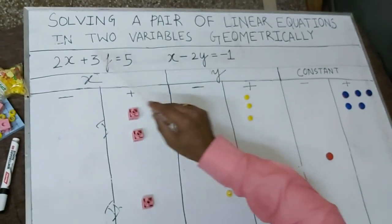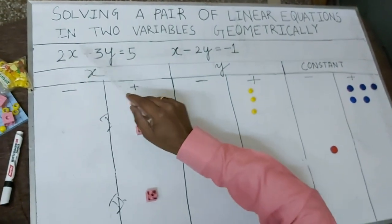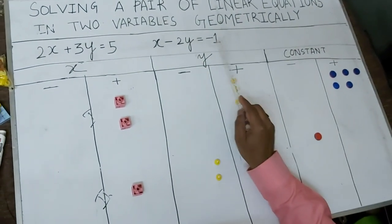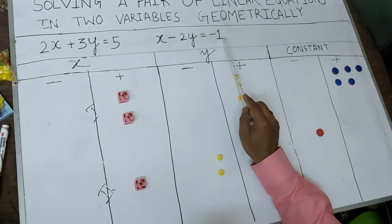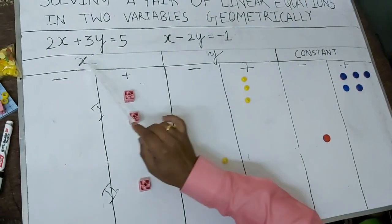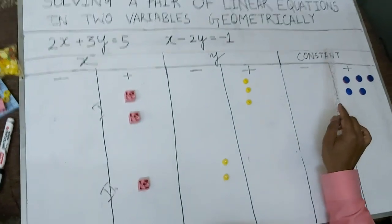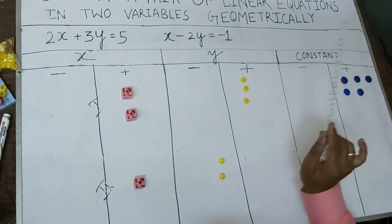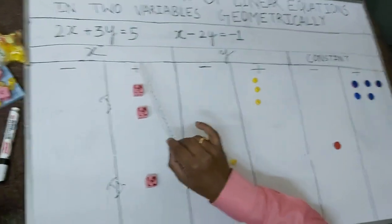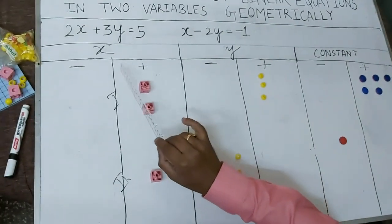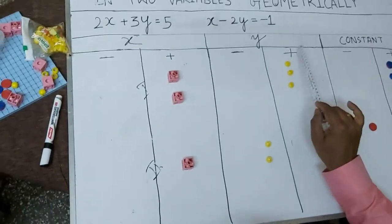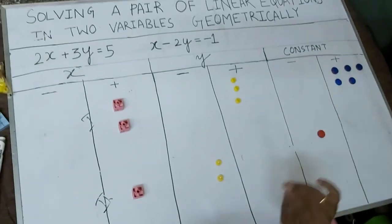I have taken these two equations: 2x plus 3y is equal to 5, and x minus 2y is equal to minus 1. This is the portion of x, this is the portion of y, and this is the portion of the constant. On the number line, positive is on the right side, so on the right side we put positive, and negative on the left.